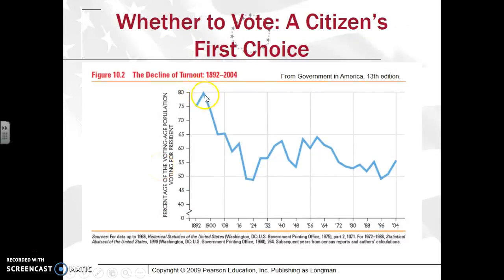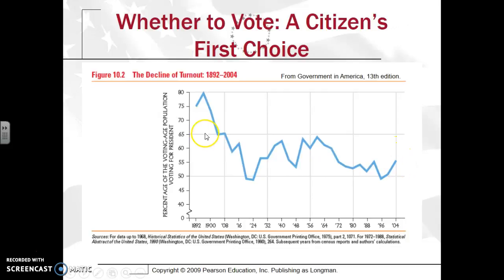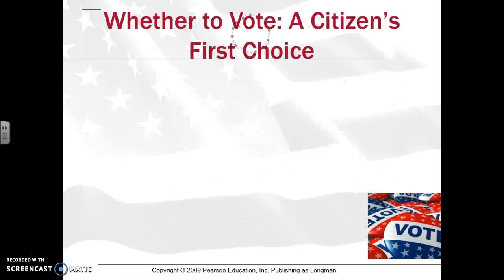When you look at the decline of turnout, notice that around 1896 about 80% of eligible adults were voting. Notice how that has significantly decreased over time, even dropping quite dramatically around 1924. It has not really recovered beyond about 50% to 60%, even when you extend this into 2008–2012. So again, the United States does have an issue with turnout.